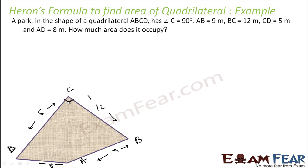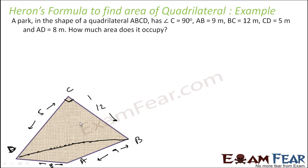What we can do is: since angle C is 90 degrees, we can break the quadrilateral by joining D and B using the Pythagorean theorem. Finding the area of triangle DCB is easy since we have a right angle. So let's find the area of triangle DCB, and then we need to find the area of the whole quadrilateral, which will be area of DCB plus area of ABD.